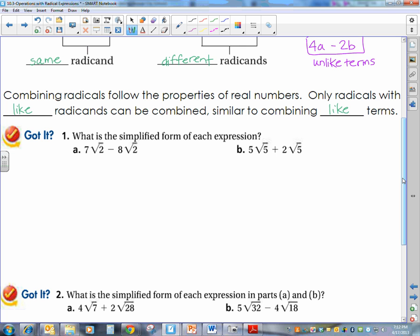So, look at the examples that we have. What is the simplified form of each expression? I look at my radicands. I have a 2, I have a 2. They're exactly the same. So, 7 square roots of 2 minus 8 square roots of 2 is like saying 7 apples minus 8 apples. And you're left with negative 1 apple or negative 1 square root of 2. We don't write the 1. It's understood.